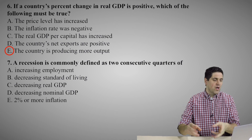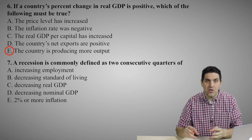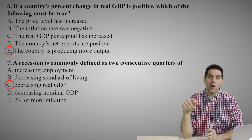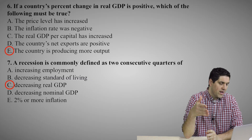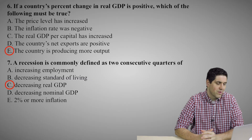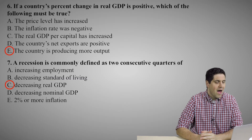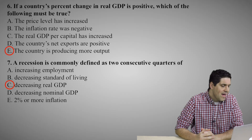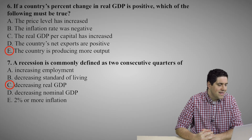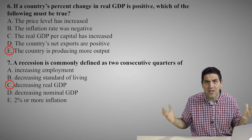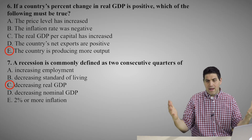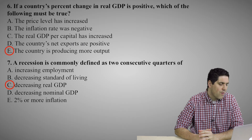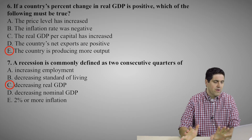Question seven is a definition question: what is a recession? A recession is two consecutive quarters of negative GDP growth, or decreasing real GDP. The right answer was C. Increasing unemployment happens with a recession, but that's not the definition. Decreasing standard of living could be true — obviously in a recession people's standards of living would fall — but that's not the definition either. The right answer was C, no doubt about it.